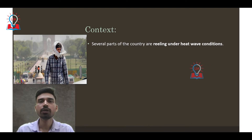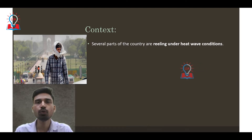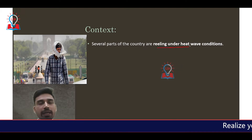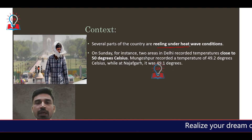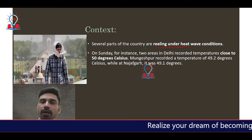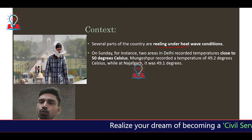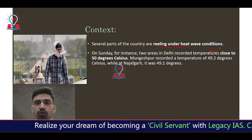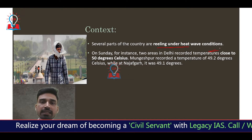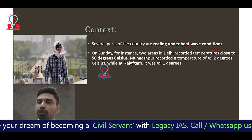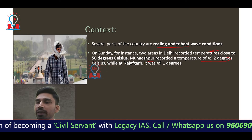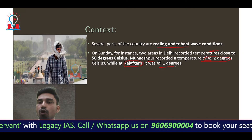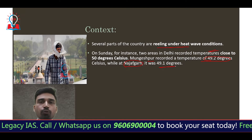For the past few weeks, several parts of the country have been reeling under severe heat wave conditions. On Sunday, for instance, two different regions of Delhi recorded temperatures almost close to 50 degrees Celsius. Mungeshpur recorded 49.2 degrees Celsius, while Najafgarh recorded 49.1 degrees Celsius.